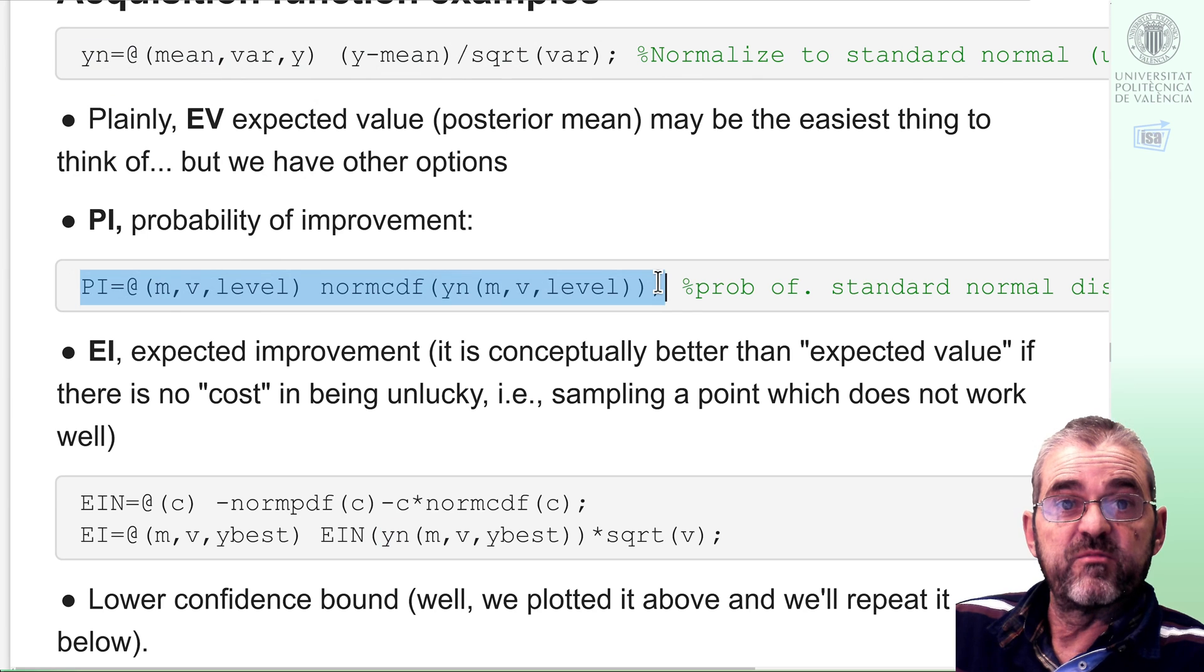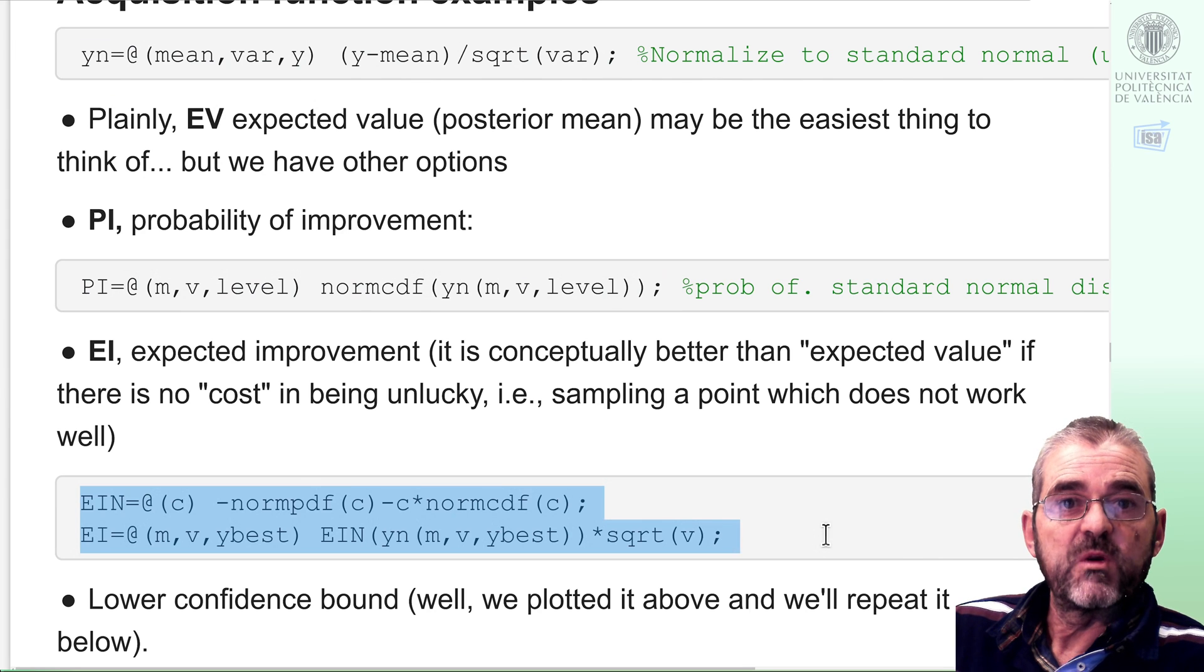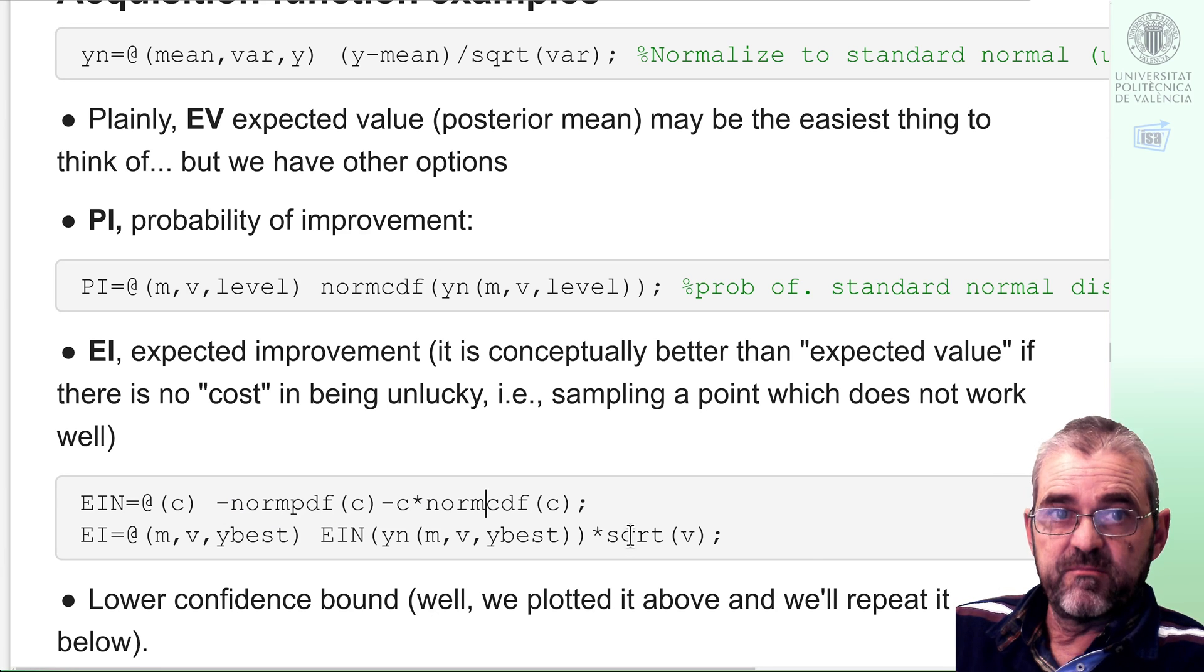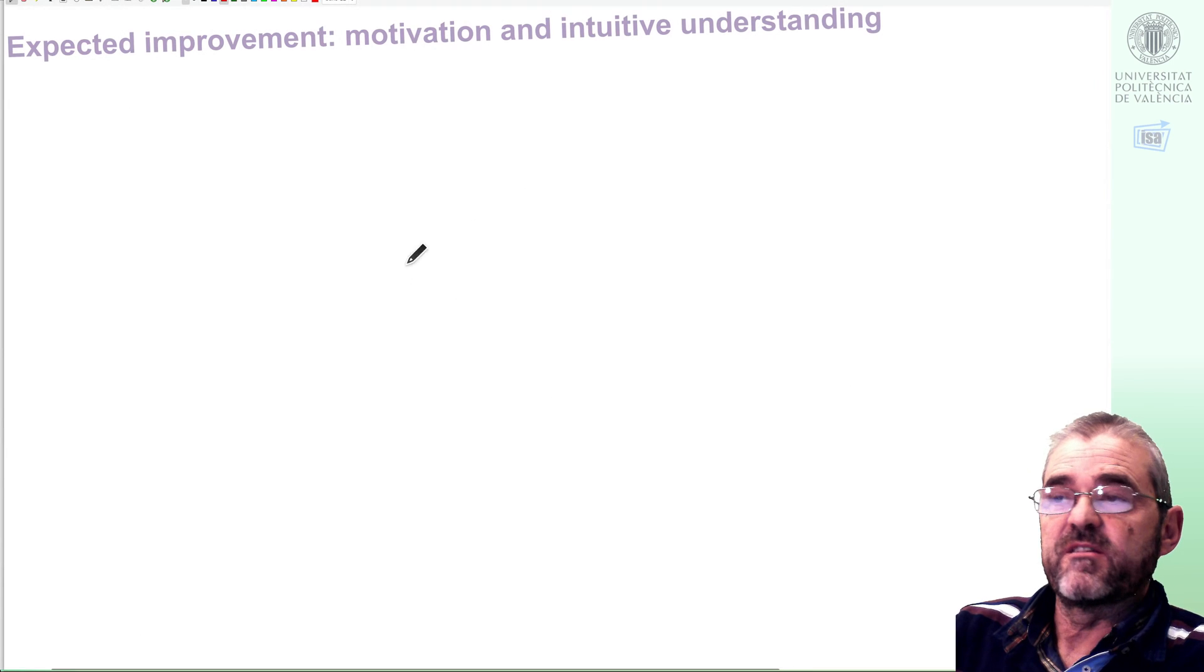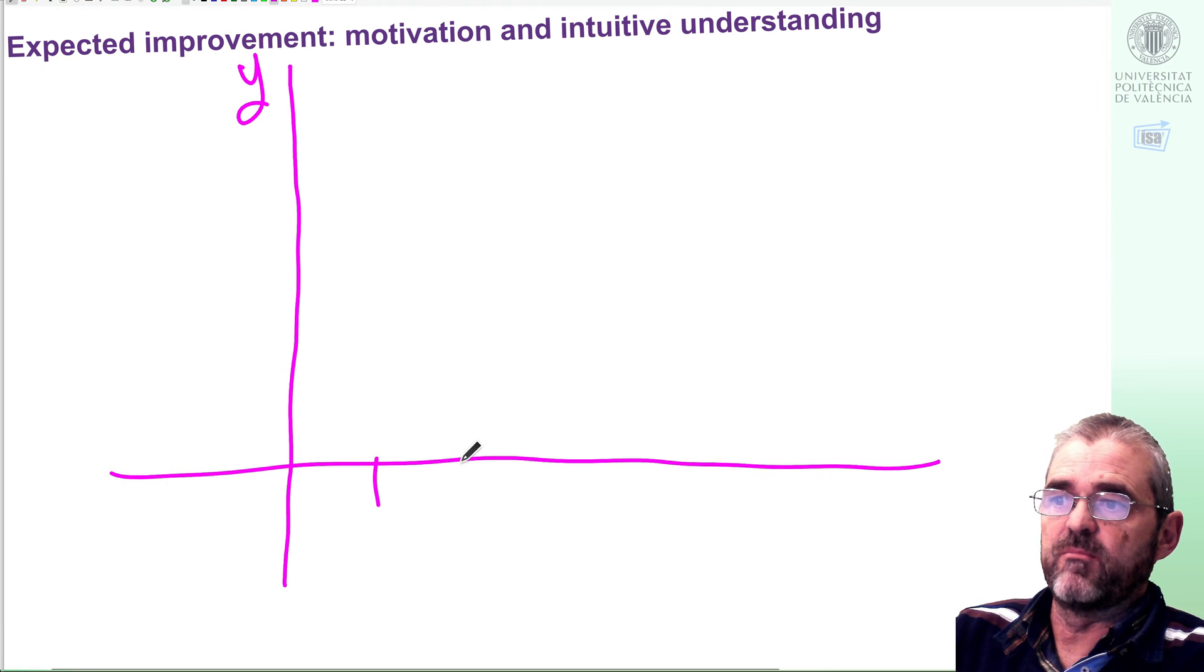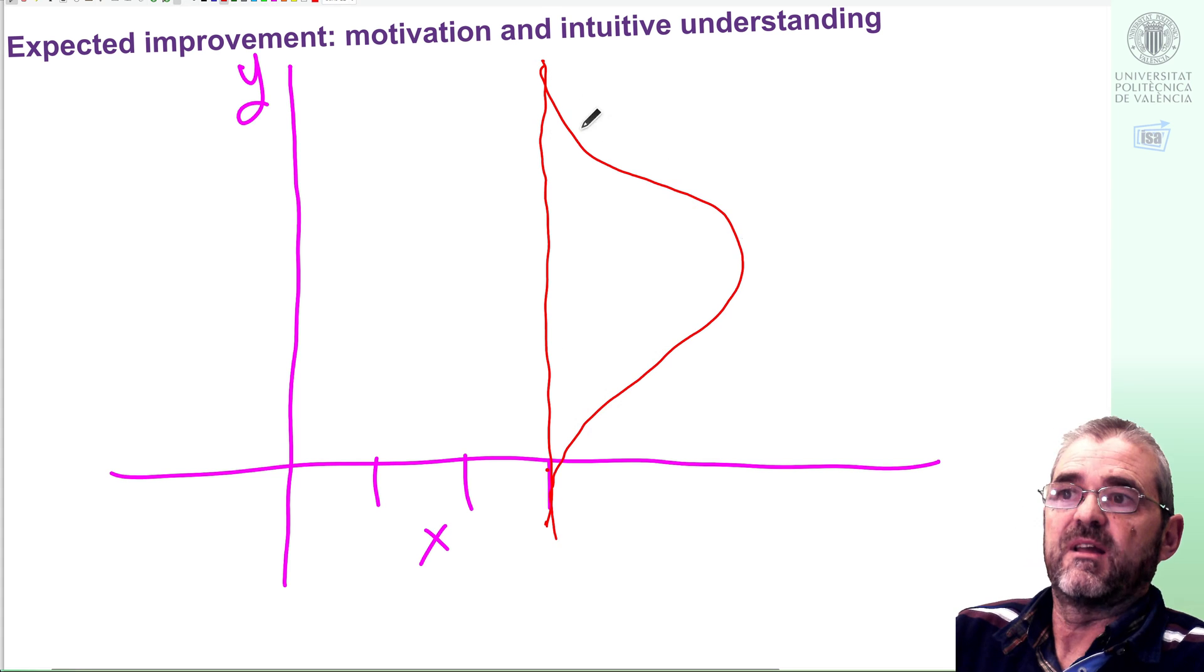This was probability of improvement, which we discussed in the previous video. And then expected improvement is this stuff, which uses the normal probability density function and the normal cumulative distribution function. I am not going to delve into the details on why this is like this. I want to concentrate on its intuitive meaning.